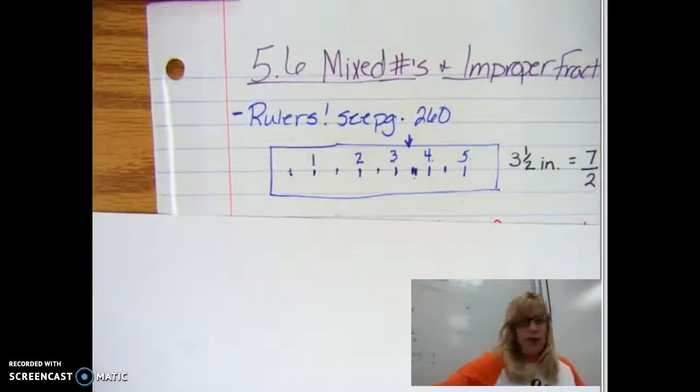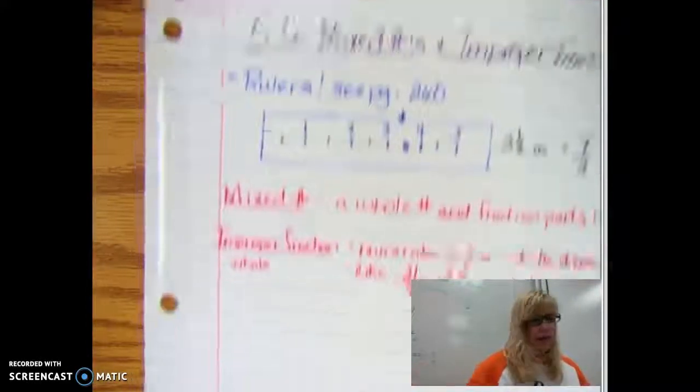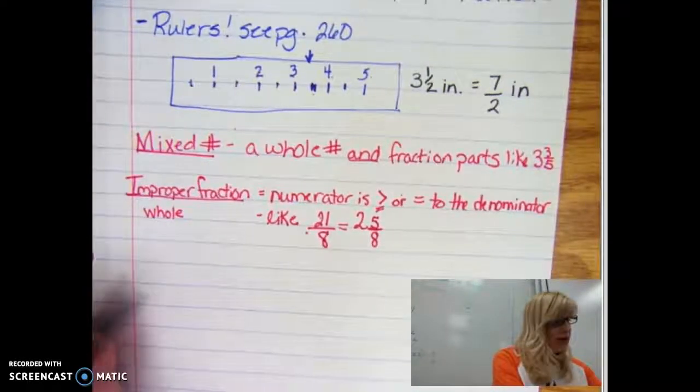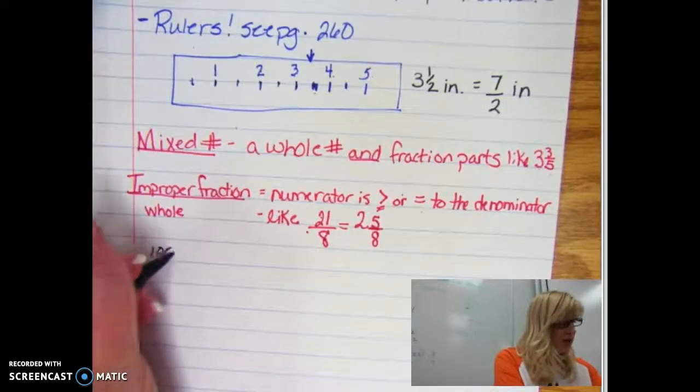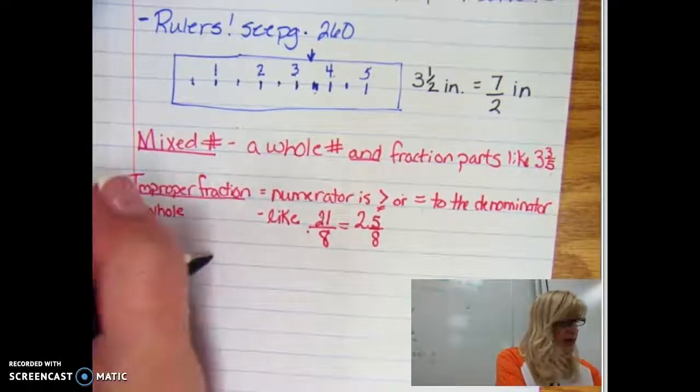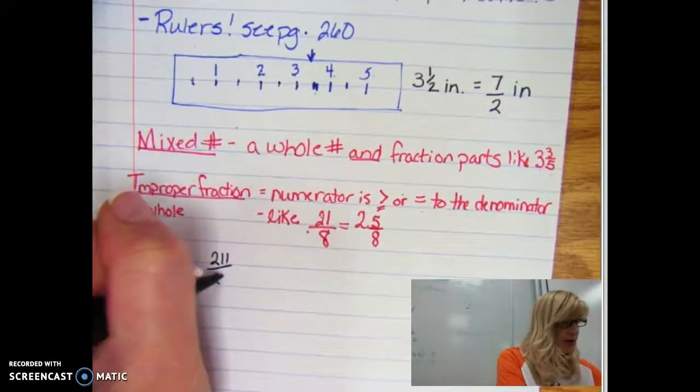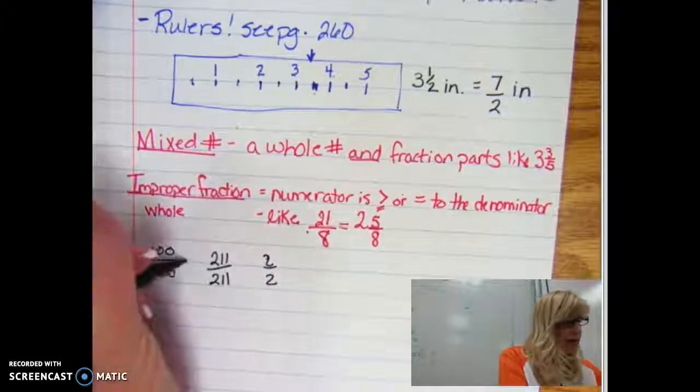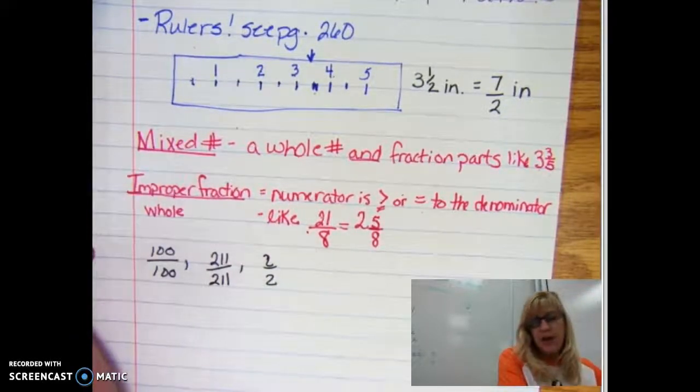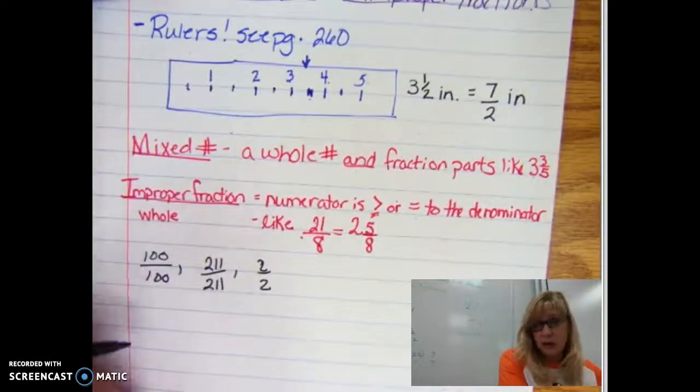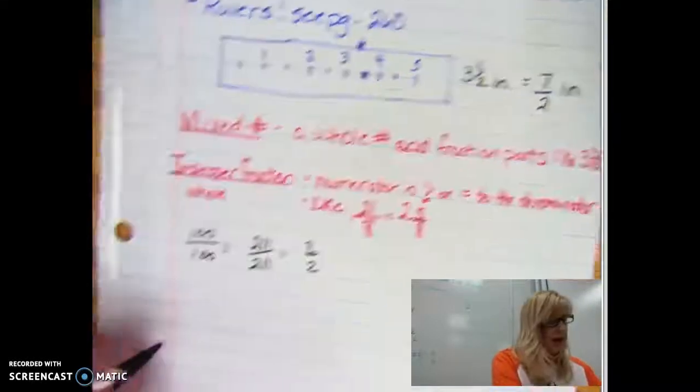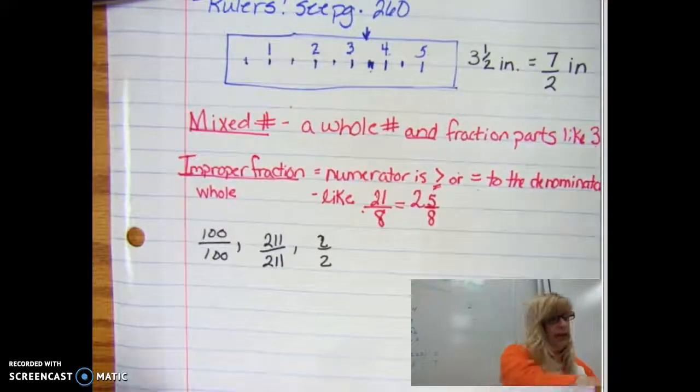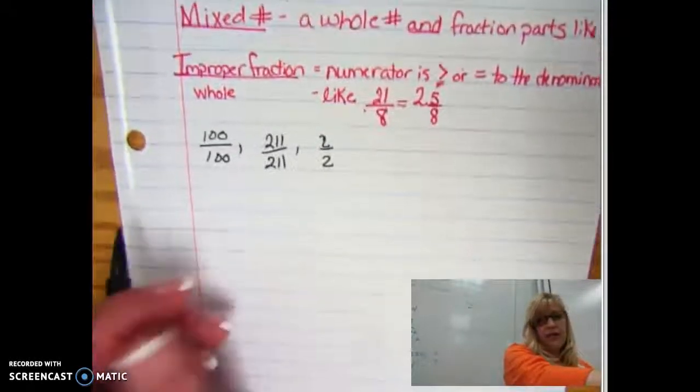We've already worked with our fancy forms of one. I'm just going to cover that briefly. Remember we can express a one any way we want as an improper fraction, so I could have one hundred over one hundred, I could have two hundred and eleven over two hundred and eleven, I could have two over two. It doesn't matter what you do, you've just chopped and sliced and diced whatever you have into littler pieces depending on your fraction.